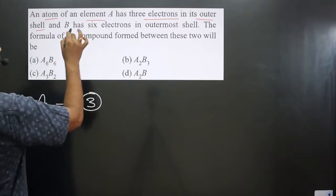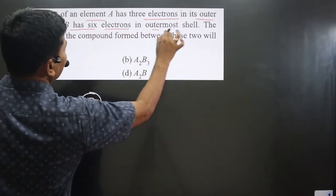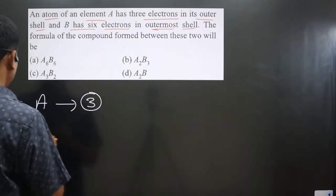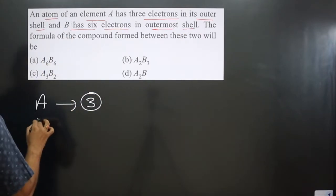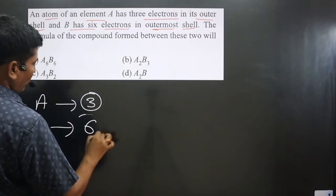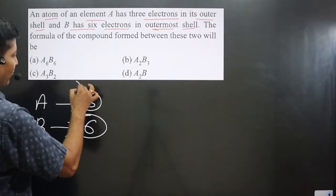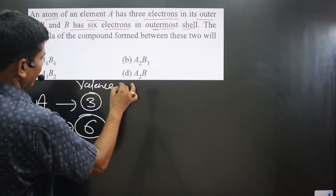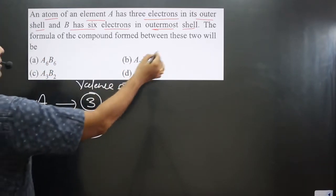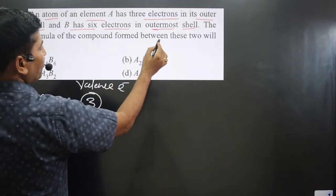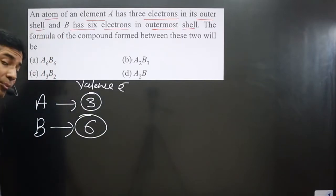And next it says B has six electrons in outermost shell. Then we can say B is having six valence electrons. These are the valence electrons. The formula of the compound formed between these two will be...